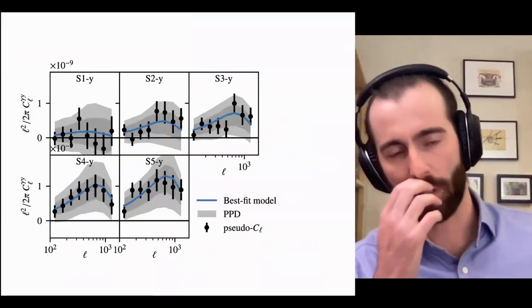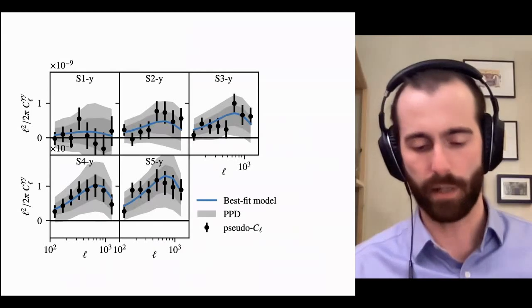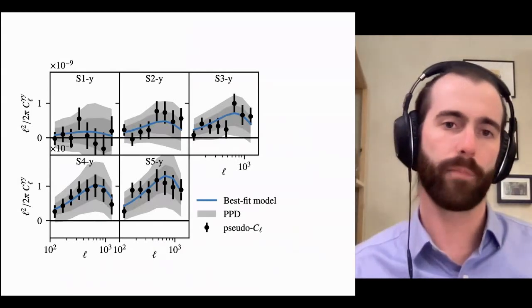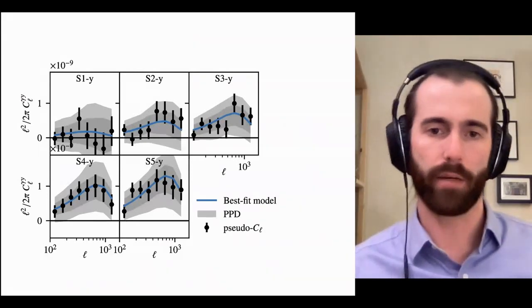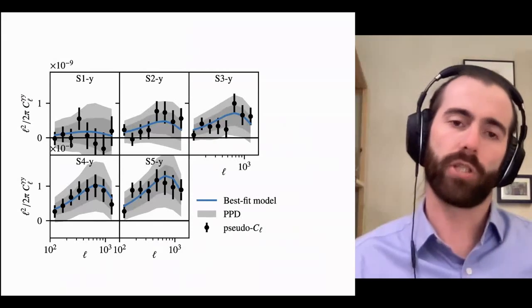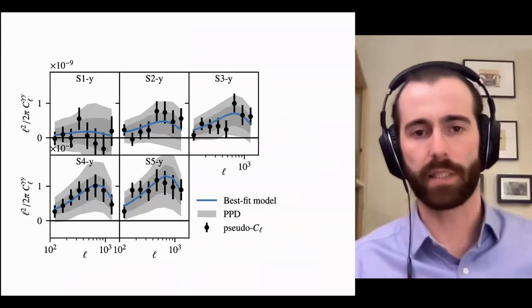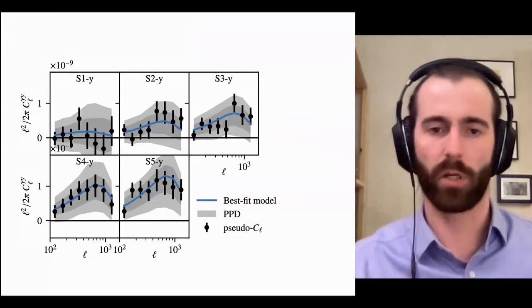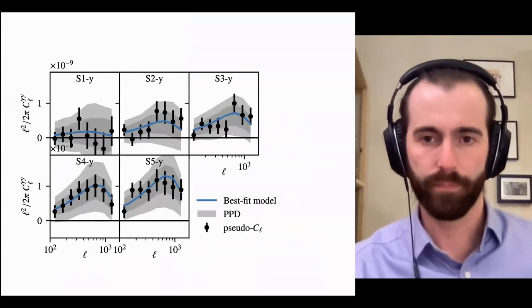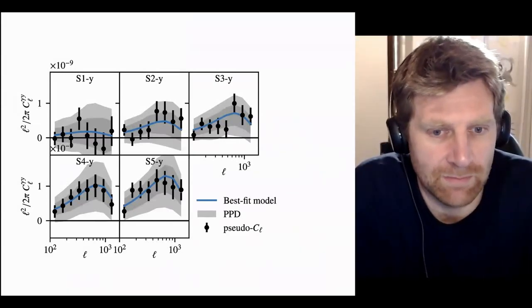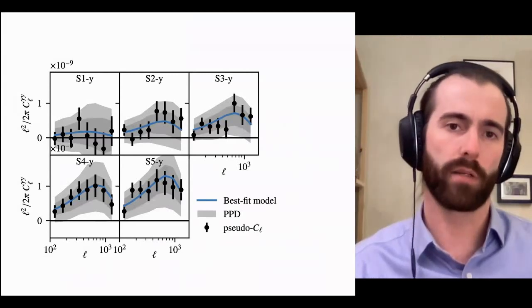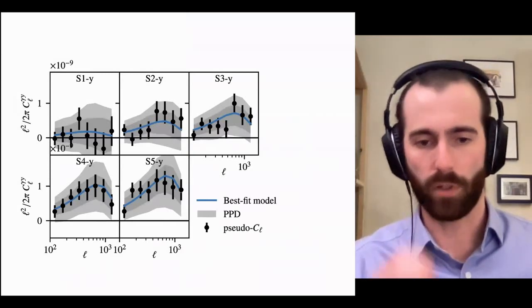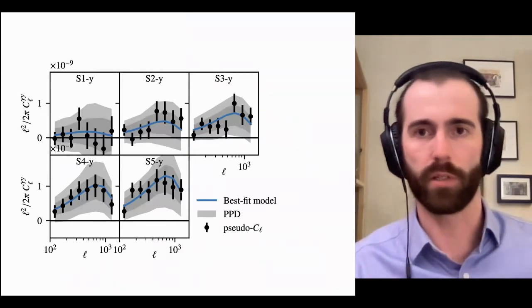Shown here is the measured cross-correlation as an angular power spectrum between KiDS1000 and the Planck data, done in tomographic bins to capture the redshift evolution of the signal. From high redshift to low redshift, we get a quite nice signal - about a 9-sigma detection. The source bins S1 through S5 span from redshift 0.0 up to 1.2. The blue line shows the best-fit model.